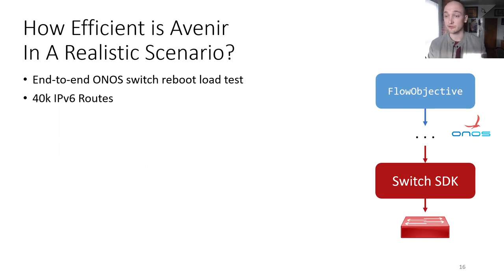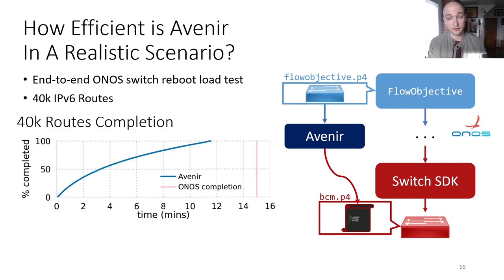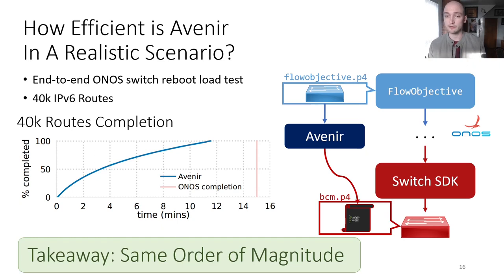To see how well Avenir works in a realistic scenario, we used data from a switch reboot load test used to benchmark ONOS, which is an open source industry-grade controller platform. We used Avenir to translate 40,000 IPv6 routes expressed in the highest level API — flow objectives — to a P4 model of a Broadcom switch developed by the ONF and Google. In the completion graph on the left, Avenir takes just under 12 minutes to translate these 40,000 insertions, and ONOS completes its end-to-end benchmark in just about 15. The takeaway is that Avenir and ONOS complete on the same order of magnitude, so the expected overhead could be anywhere between 0 and just under 2x.